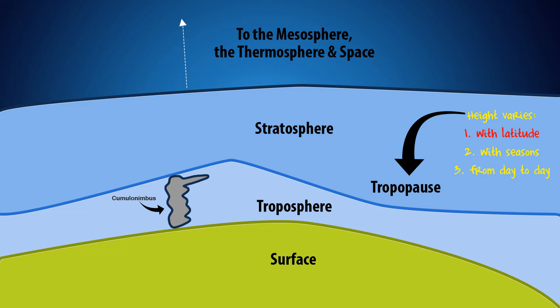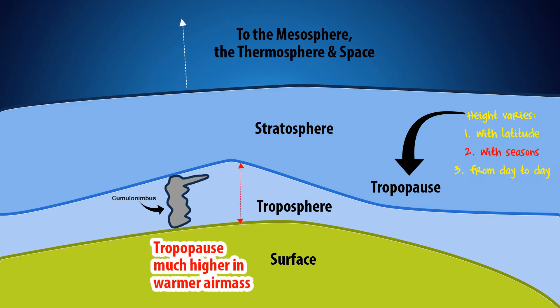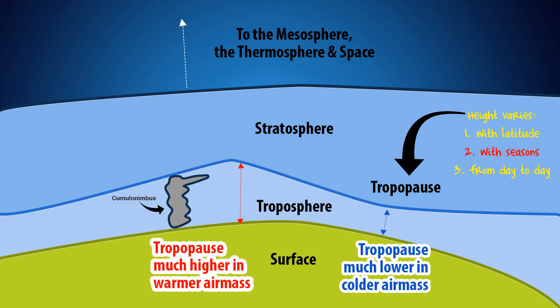The tropopause height varies with latitude — the average equator height is 55,000 feet, with polar regions at 25,000 feet. It also varies with seasons, as it's higher in summer than in winter, and from day to day.